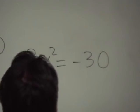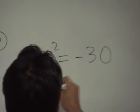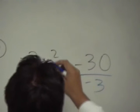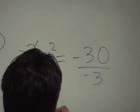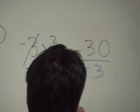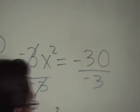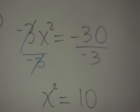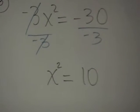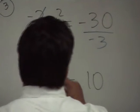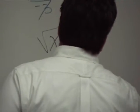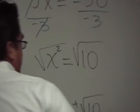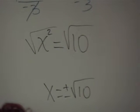I divide by negative 3 and I get x squared is equal to 10. Now we are going to take the square root of both sides and I get x is equal to plus or minus the square root of 10, but is 10 a perfect square? No.